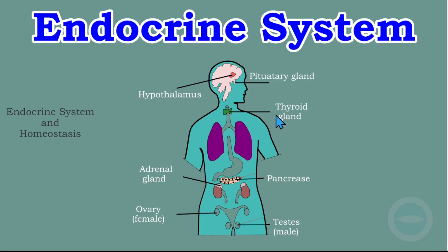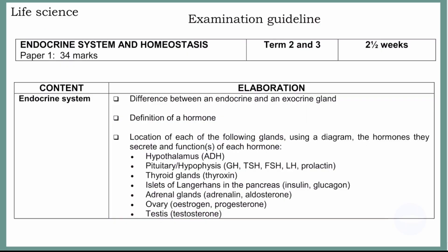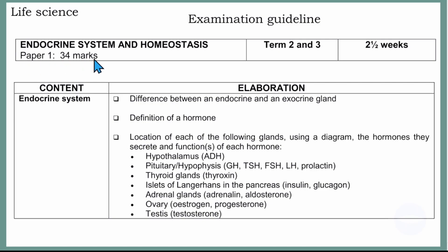Here I have the examination guideline for life sciences grade 12. We are on endocrine system and homeostasis. This topic falls under paper 1 when we write the exam and it collects about 34 marks. So 34 marks is a lot of marks — we must understand this topic.